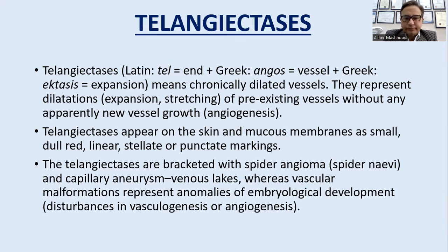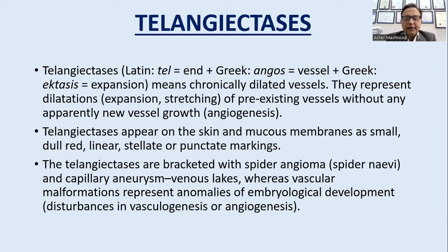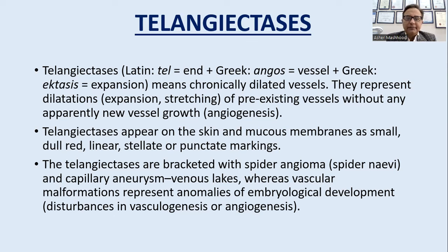Telangiectasias comes from the Latin word 'tel' which means end, 'angio' means vessels, and 'ectasis' means expansion — that is, chronically end-dilated vessels. Telangiectasias represents the dilation, expansion or stretching of pre-existing vessels, without any apparent new vessel growth or angiogenesis. So it is primarily the expansion and dilation of pre-existing vessels and not angiogenesis.